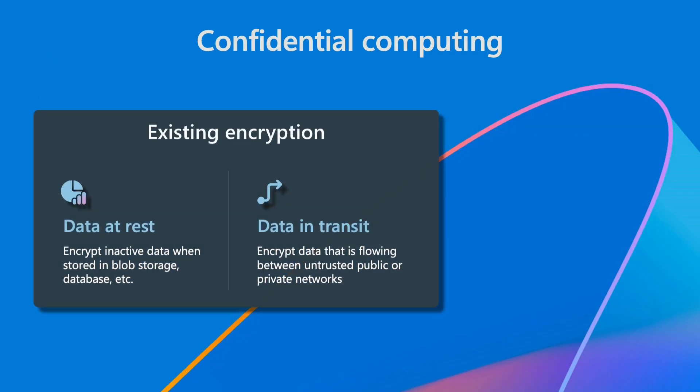Let's start with what confidential computing is. Every industry has the need to protect data throughout its lifecycle. When we store data on a disk, we encrypt it — that protects data from anyone with physical or logical access to the media. Likewise, when we transfer data, we encrypt it over the wire, so anyone sniffing the network only sees the encrypted data.